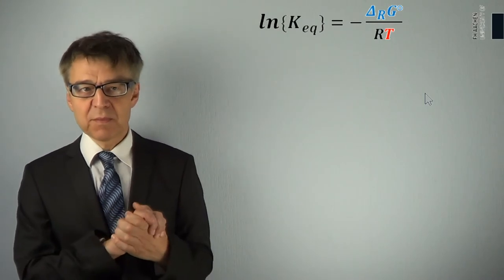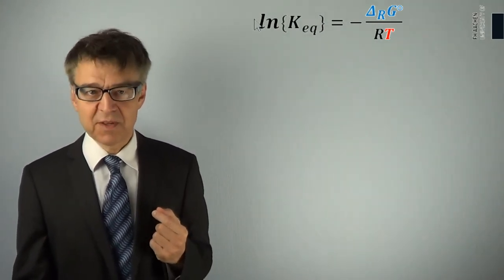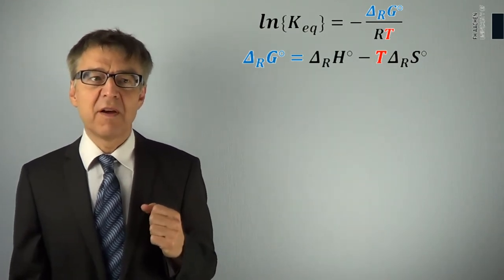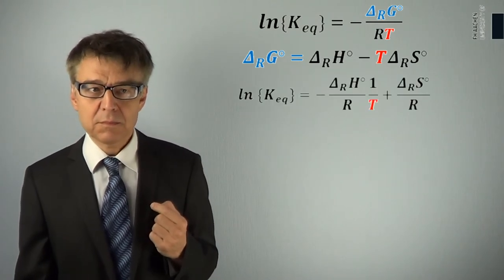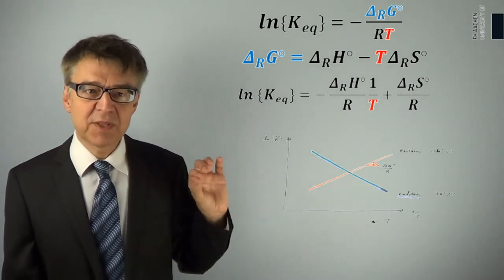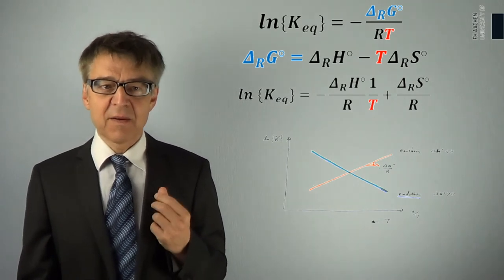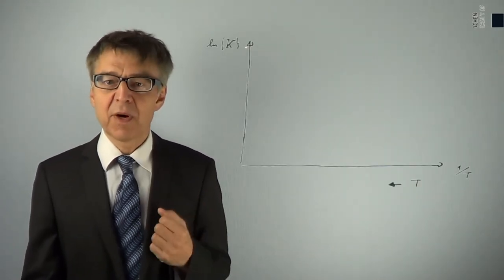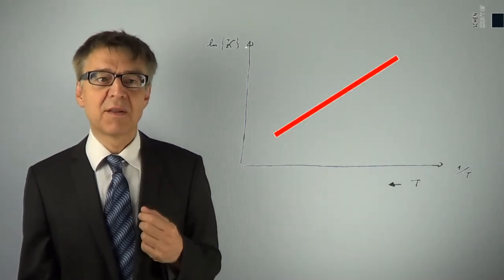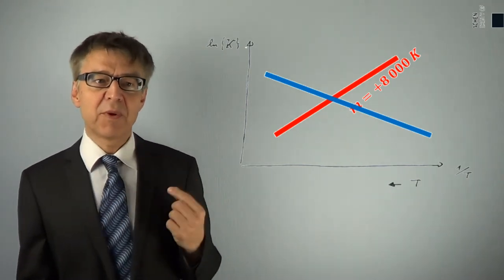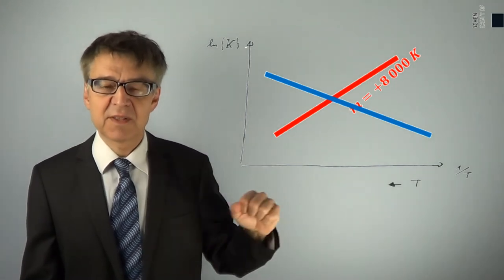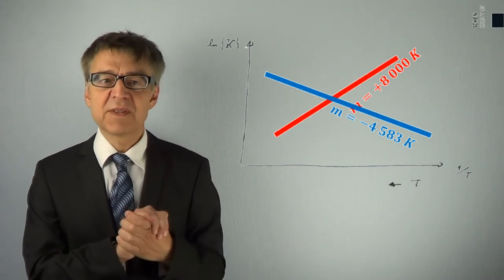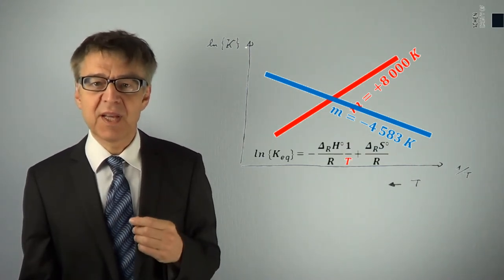The dependence of the equilibrium constant on temperature can be described quantitatively if we combine the Gibbs-Helmholtz equation with a formula to calculate the equilibrium constant. We obtain the so-called Van't Hoff reaction isobar. The plot of the logarithm of the equilibrium constant against the reciprocal of temperature provides a straight line with a slope related to enthalpy change delta H. With an exothermic reaction, the slope of the Van't Hoff plot is positive. With an endothermic reaction, the slope is negative — that is, with endothermic reactions, equilibrium shifts to the right with increasing temperature, while the equilibrium of an exothermic reaction will shift to the left as temperature rises. Using the slope of the Van't Hoff plot, reaction enthalpies may easily be calculated.